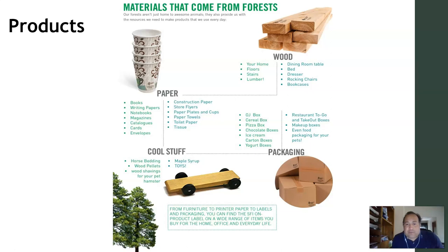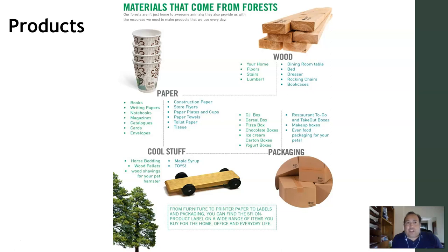Here is a much more defined list of things that we get from the forest. One of my most interesting items on this list is maple syrup. Maple syrup is converted from the sap from maple trees. It's something that people don't think about as a forest product, but it's definitely something that comes from the forest — from maple trees in Canada and the New England area of the United States.